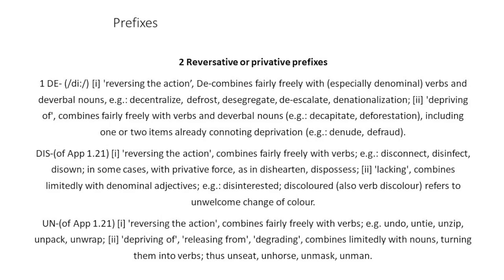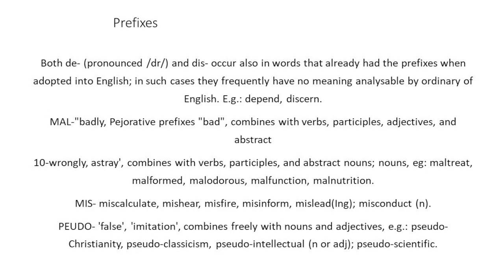In some cases 'dis-' carries privative force, as in 'dishearten,' 'dispossess.' Meaning lacking, it combines limitedly with nominal adjectives, for example 'disinterested,' 'discolored.' 'Un-' means reversing the action and combines fairly freely with verbs: 'undo,' 'untie,' 'unzip,' 'unpack,' 'unwrap.' With the meaning depriving of, releasing from, or degrading, it combines limitedly with nouns, turning them into verbs: 'unseat,' 'unhorse,' 'unmask,' 'unman.' Both may be pronounced as 'de-,' which also occurs in words that already had the prefix when adopted in English.